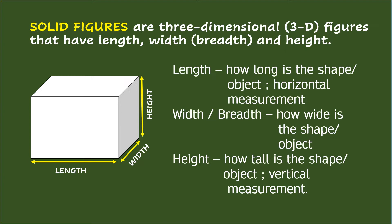The length of solids indicates how long the shape or object is. The width, or breadth, tells how wide the shape or object is. And the height tells how tall the shape or object is. The difference between length and height is that length is the horizontal measurement, while the height is the vertical measurement.